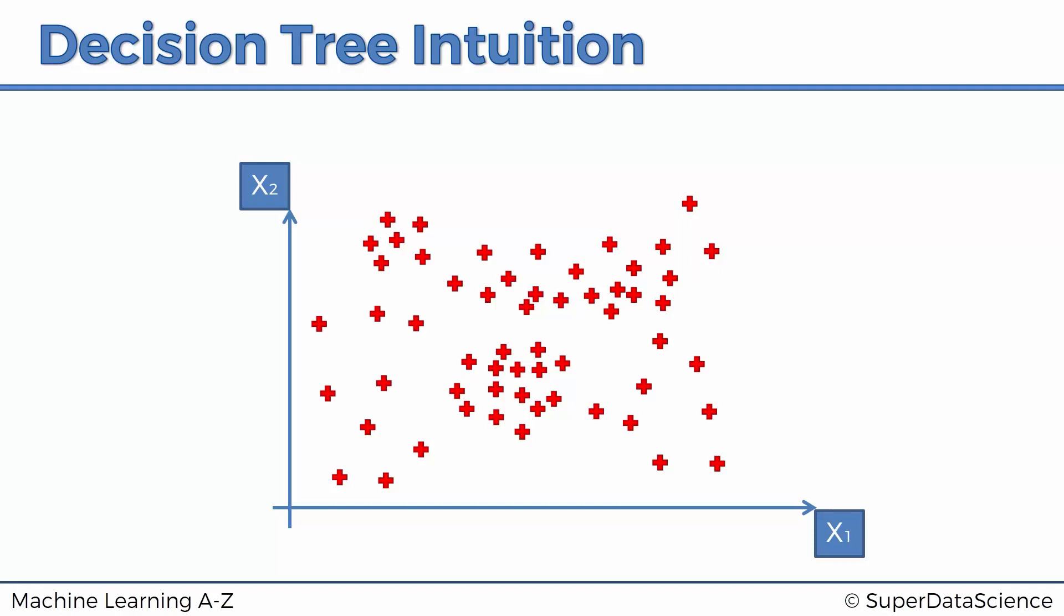Once you run the regression tree or decision tree algorithm in the regression sense of it, what will happen is your scatterplot will be split up into segments. Let's have a look at how an algorithm could go about doing that. The algorithm would create a split over here, for example, at somewhere around 20.